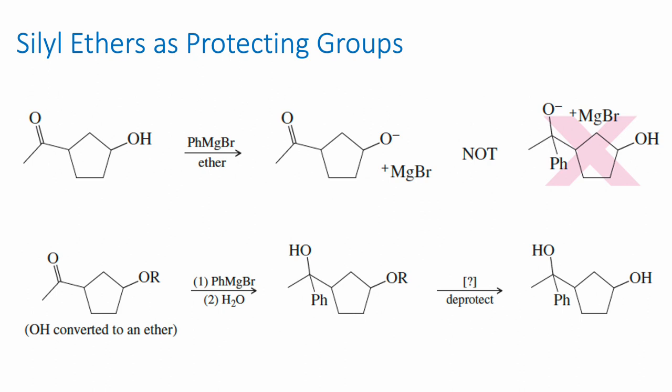To avoid that problem, we need to hide the acidic proton. If we convert the alcohol to an ether instead, we no longer have that acidic proton, and the Grignard will do what we want — attack the carbonyl. So the strategy is: convert the alcohol to an ether, do the Grignard reaction, and then reconvert the ether back to an alcohol if the target molecule needs an alcohol.